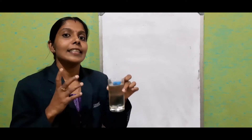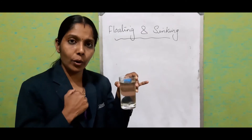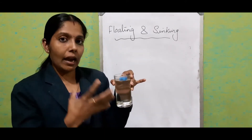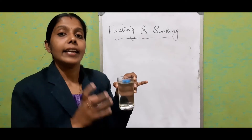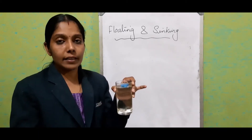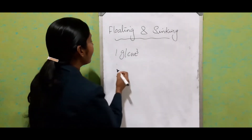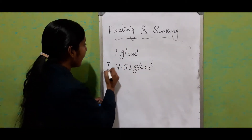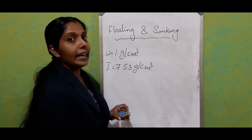Today's topic is sinking and floating. Now what is the reason this screw sank inside the water? We studied this chapter dealing with density, so we can give an explanation in terms of density. The screw sank because it is made up of iron and the density of iron is greater than water's density. The density of water is 1 gram per centimeter cube, and the density of iron is 7.53 gram per centimeter cube. Iron has greater density, that's why it sinks inside the water.